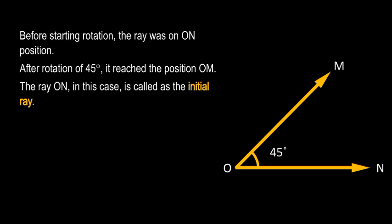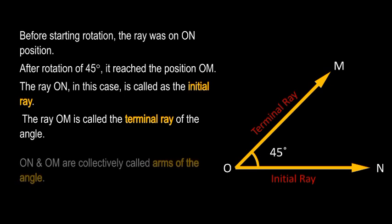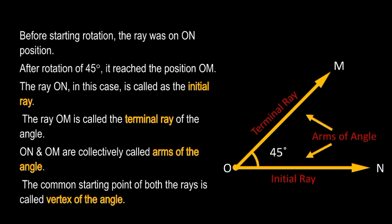The ray ON in this case is called the initial ray. The ray OM is called the terminal ray of the angle. ON and OM are collectively called arms of the angle. The common starting point of both rays is called the vertex of the angle.